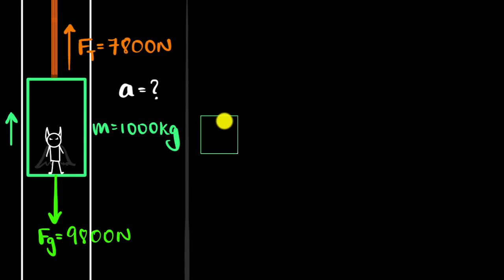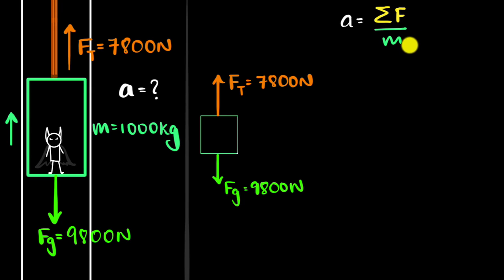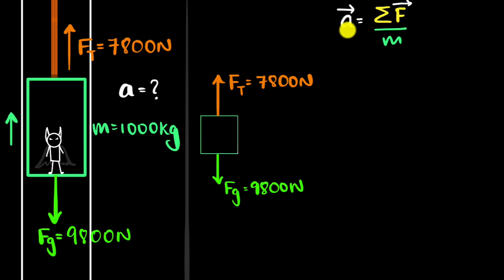Let's draw all the forces acting on it. We have an upward force — that's tension — and a downward force, that's the force of gravity. Our goal is to calculate the acceleration. We use Newton's second law, which says the acceleration equals the net force acting on an object divided by its mass. Since we're dealing with vectors, the direction of the acceleration will be the same as the direction of the net force. We know the mass, so from the net force we can calculate the acceleration.